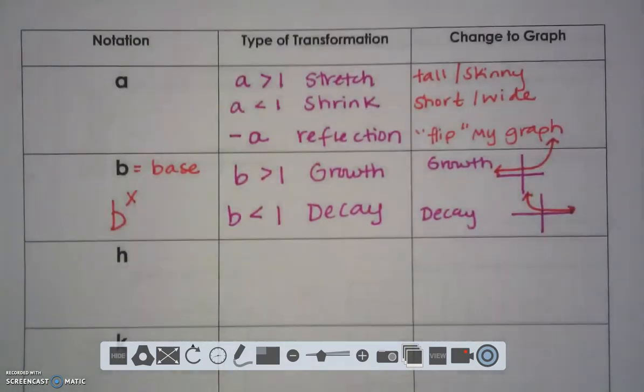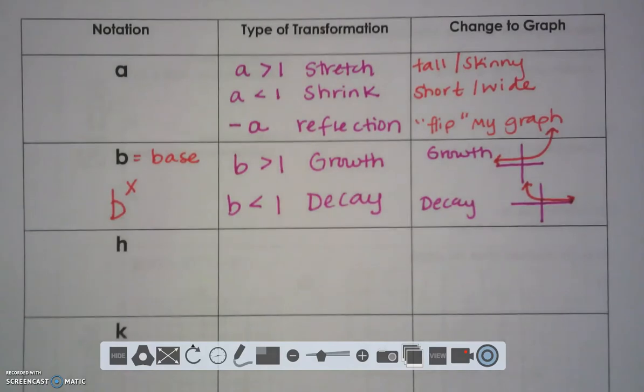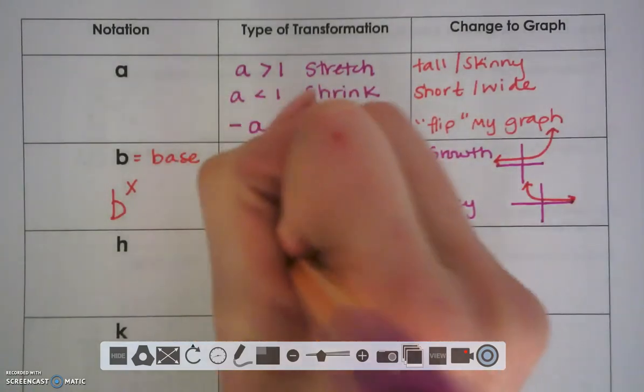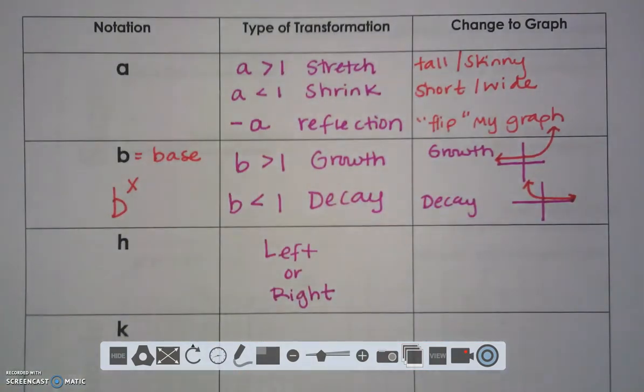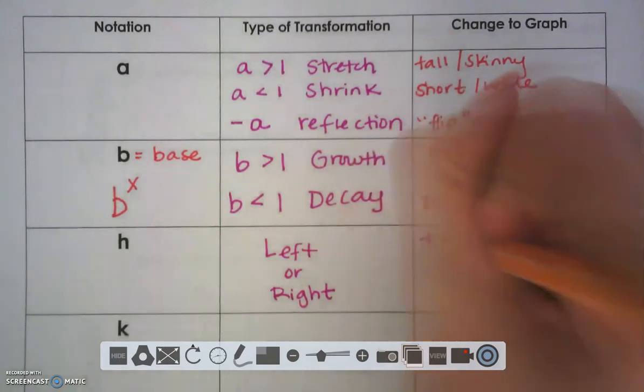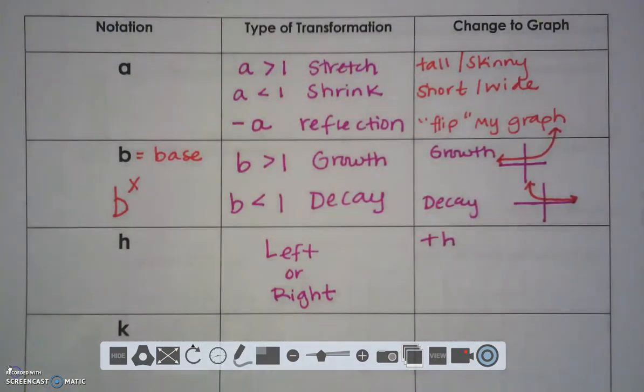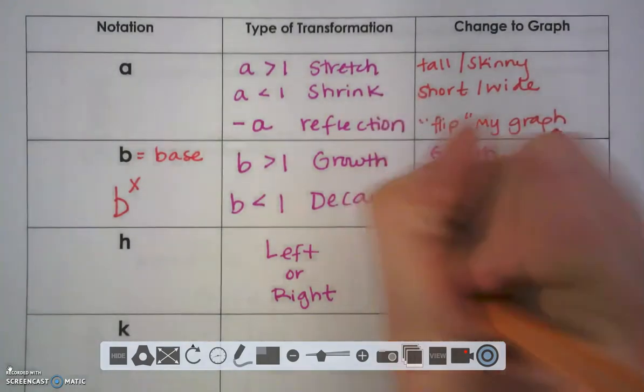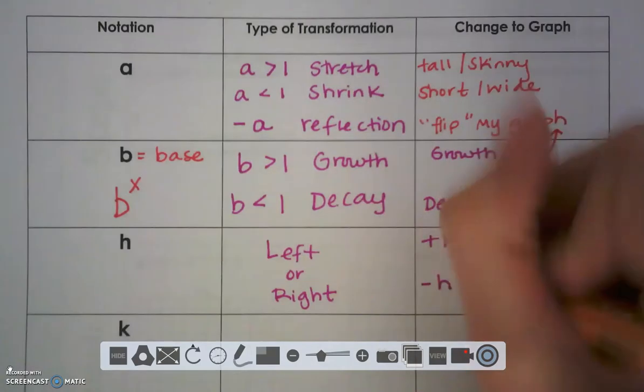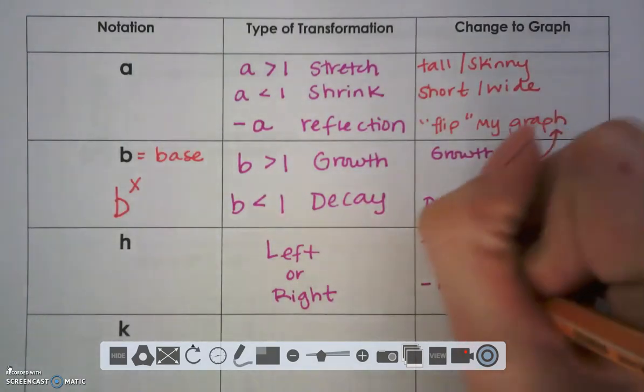H is still a horizontal movement. H is still a movement to the left or right. And again, just like in quadratics, if I have a positive H, a positive H gives me a transformation of moving to the right.